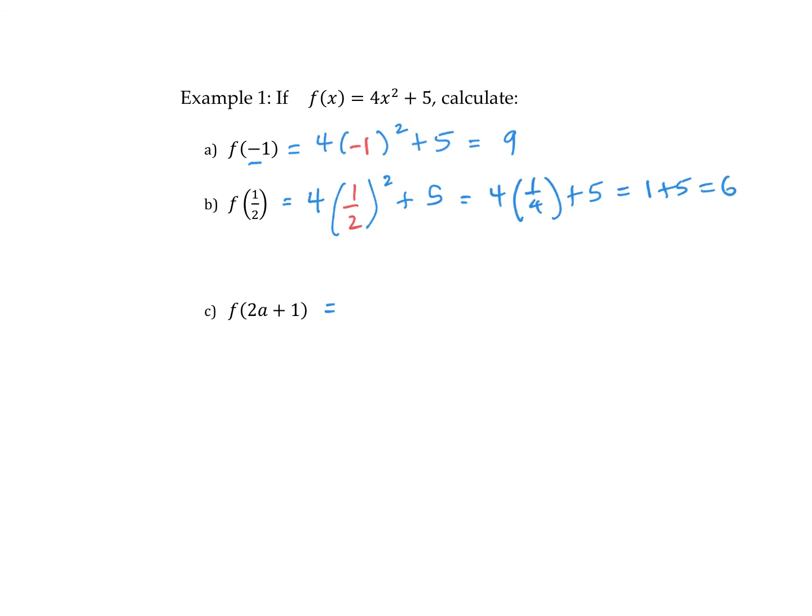We could substitute in a binomial. So it doesn't have to be a single number. It could be some sort of expression. So we want to substitute in 2a plus 1. Just be careful expanding. If you can't remember, 2a plus 1 squared means multiply 2a plus 1 times 2a plus 1. So sometimes it's a good idea to write it out twice so that you don't forget to multiply all terms.